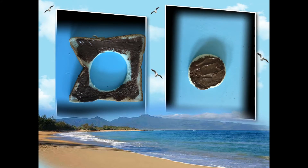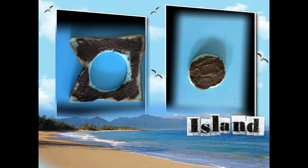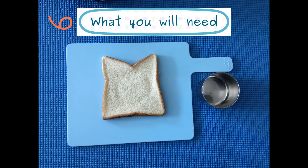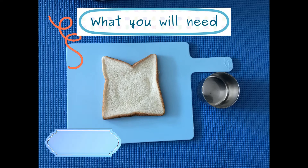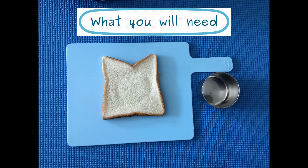Do you want to make an island and a lake with a slice of bread? You will need a blue surface — either a chopping board, a plate, or a tray — one slice of bread, and any round cookie cutter or a bowl which you can use to cut.